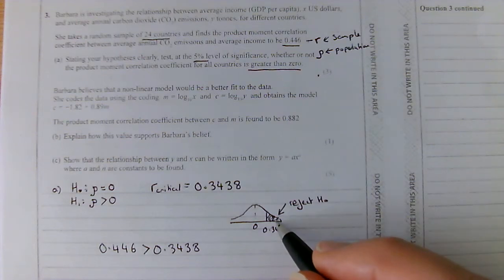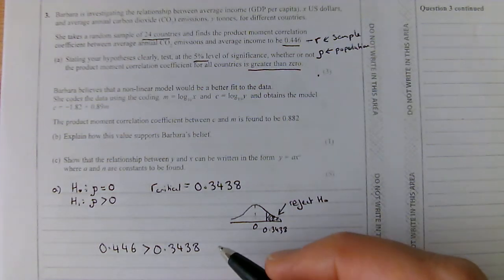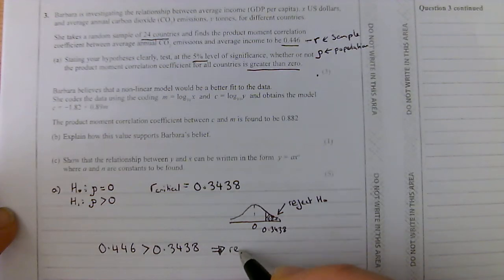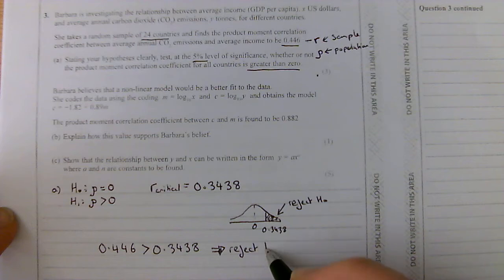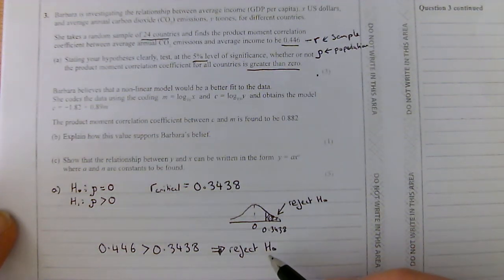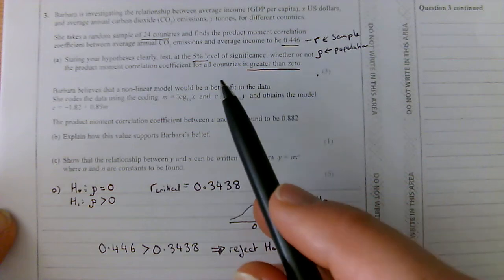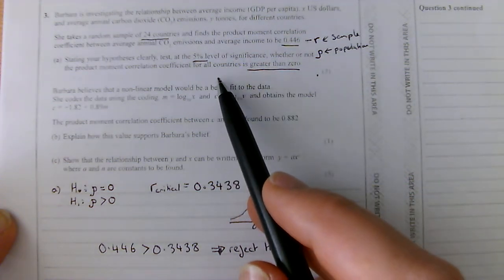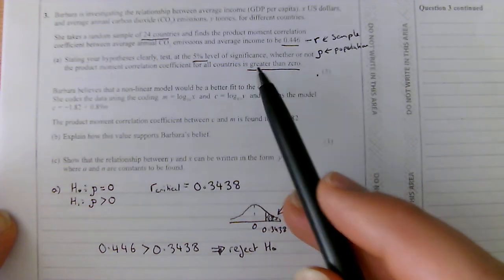So we're up here. So this means that we can reject H0. Now, be careful. With any hypothesis testing, that answer would not be good enough. We need to explain what it means in terms of the question. So, go back to the question, whether or not the product moment correlation coefficient for all countries is greater than 0.